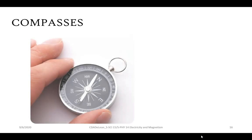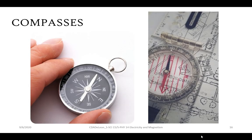A compass is an instrument used for navigation and orientation that shows direction relative to the geographic cardinal directions. Usually a diagram called a compass rose shows the direction north, south, east, and west on the compass face as abbreviated initials.